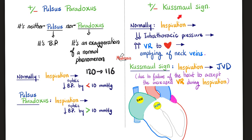Kussmaul's sign: normally during inspiration, increased volume and decreased intrathoracic pressure raises venous return, sucking blood toward the right atrium and ventricle — so neck veins empty. But with a thick pericardium, inspiration gives the opposite: filling of neck veins, jugular venous distension.